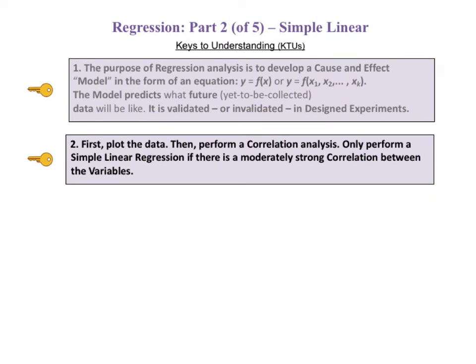The second KTU states: first plot the data, then perform a correlation analysis. Only perform a simple linear regression if there is moderately strong correlation between the variables.